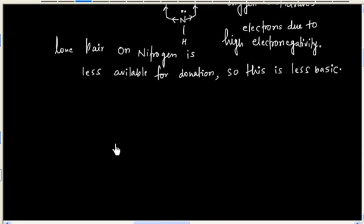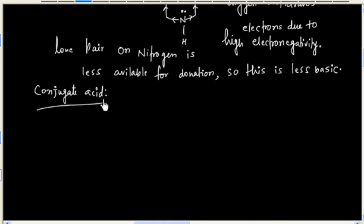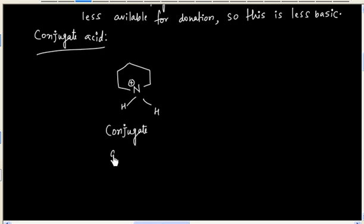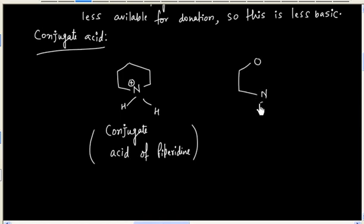The same thing can also be explained on the basis of formation of the corresponding conjugate acid. The conjugate acid of piperidine is formed when it accepts a proton — this is the conjugate acid of piperidine.